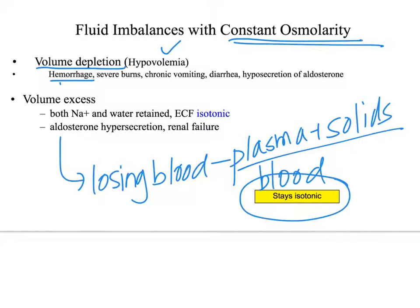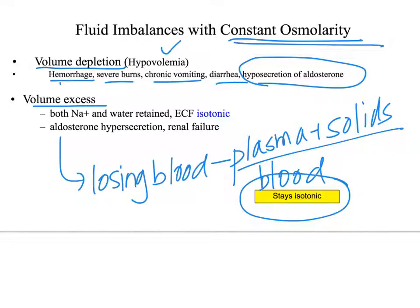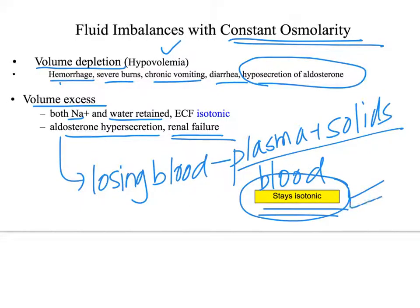Hypovolemia can also be caused by severe burns, vomiting, diarrhea, or problems with aldosterone levels. Volume excess occurs when you're gaining water while keeping the concentration constant — retaining both sodium and water together. This can happen with excessive aldosterone production, an adrenal cortex problem, or renal failure. In all these cases, there's no change in osmolarity — everything stays isotonic.